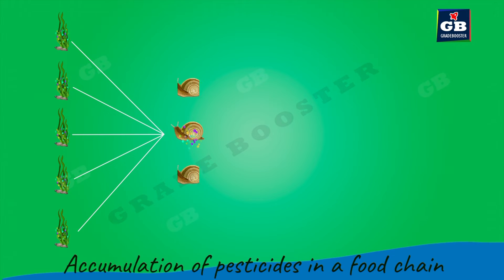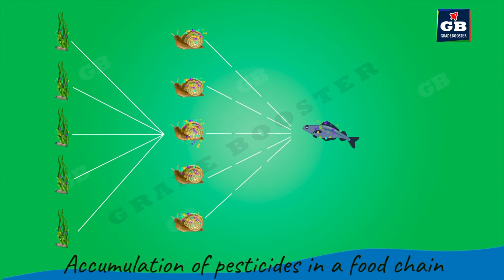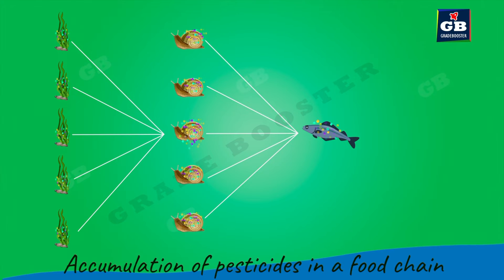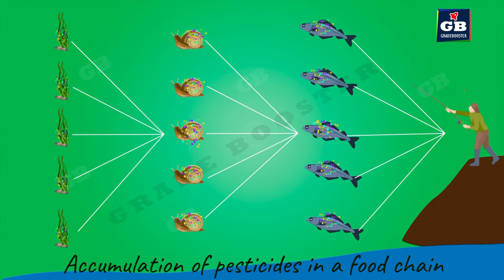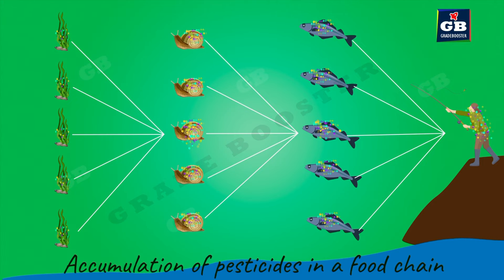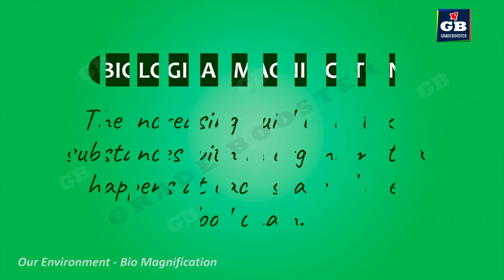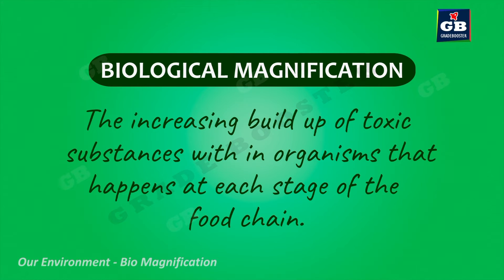Now, fishes eat such contaminated snails in a very large quantity in their lifetime. Then these fishes will get more chemical deposits into their bodies. Consider the next organism in this food chain is man, who usually stays at the top of the food chain. If a man consumes such contaminated fish in large quantity, all the chemical residues present in the bodies of the fish enter the body of the man. In this way, the pesticide and insecticide residues get deposited and accumulated in our bodies.